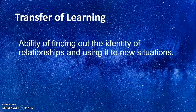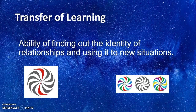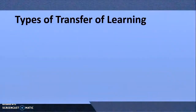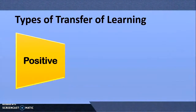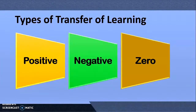One definition of transfer of learning is: the ability of finding out the identity of relationship and using it in a new situation. So when you learn something in one situation and a new situation comes, you try to find out the identity of relationship between the two situations and apply it. There are different ways to classify types of transfer of learning, but one classification includes positive transfer, negative transfer, and zero transfer of learning.